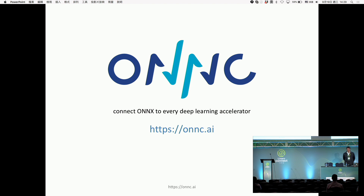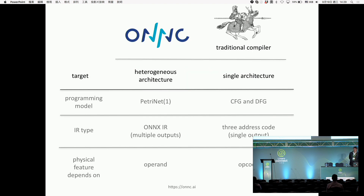The goal of the project is to try to connect every DLA deep learning accelerator to the ONNX file format. And here is our website — welcome to visit. Many people ask us: we already have a lot of AI compilers. Why do you guys need to reinvent the wheel? Why do you guys need a new compiler?